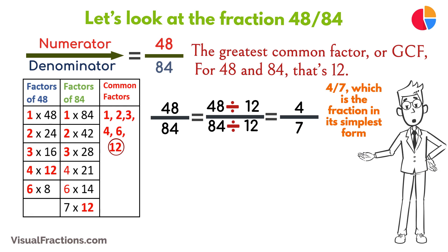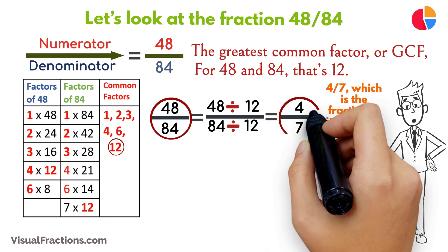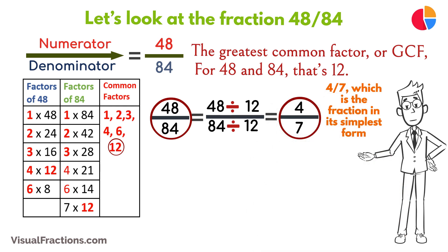It's interesting to note that both the original fraction 48/84 and the simplified fraction 4/7, though different in appearance, represent a specific value when compared as decimals. The exact decimal for 4/7 is approximately 0.5714. This shows that although their appearance may change, their value remains consistent.